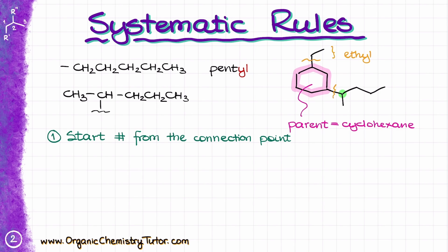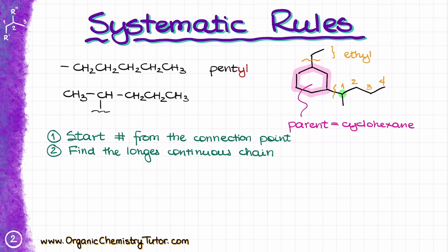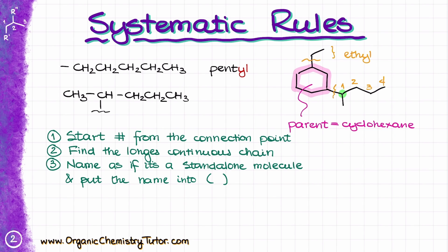In this case, the longest continuous chain of the substituent is four carbons long: one, two, three, four. Once I've found the longest continuous chain, I'm going to name it as if it were a standalone molecule — but the ending is still -yl, just like any other substituent — and we put the whole name in parentheses. To illustrate: this is my connection point to the main molecule, then I have carbons one, two, three, four, and a substituent over there.